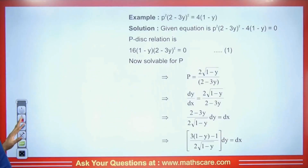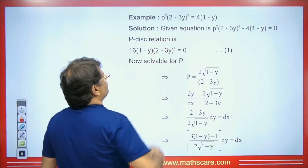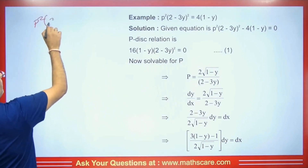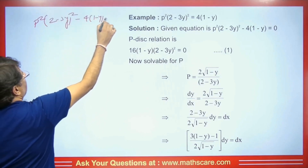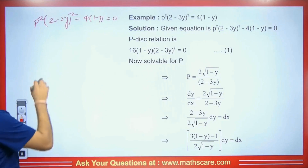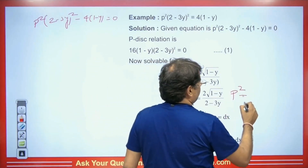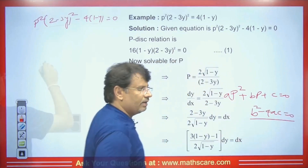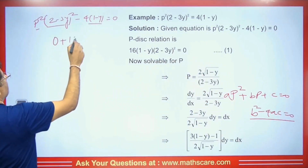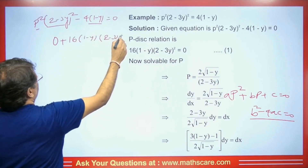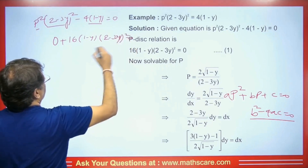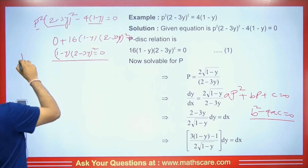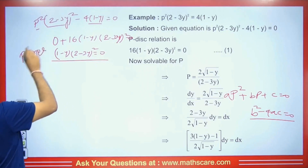Now I'll explain through an example. Take the equation p² · (2−3y)² = 4(1−y). We rewrite this as p² · (2−3y)² − 4(1−y) = 0 and find the P discriminant using b²−4ac = 0. With b = 0, we get 16(1−y)(2−3y)² = 0, which simplifies to the P discriminant: (1−y) · (2−3y)² = 0.